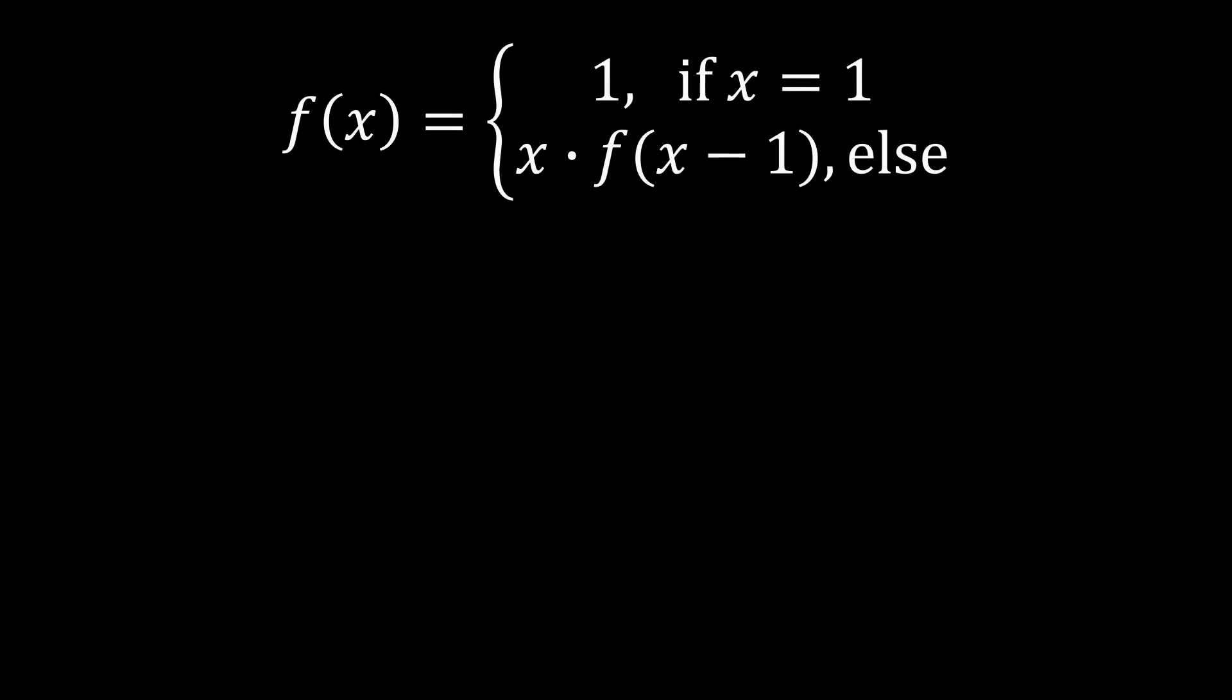This video is about recursion and backtracking. The factorial function is a classic inductive mathematical function defined as follows: if the input is the natural number 1, then the factorial function returns 1. This is the base case. If the input is a higher natural number x, then the factorial function returns the product of x and the factorial function of x minus 1. This is the induction step.